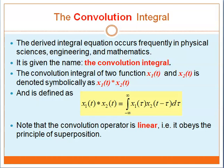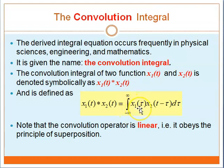The convolution integral of two functions S1(t) and S2(t) is denoted as S1(t) star S2(t), also written as S1(t) convoluted with S2(t). This is defined as the integration from minus infinity up until infinity of S1(tau) times S2(t minus tau) d-tau. Please note that the convolution operator is linear — in other words, it obeys the principle of superposition.